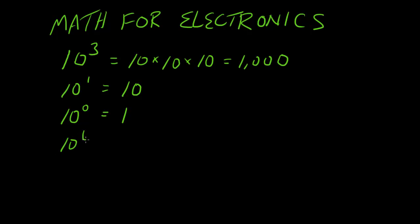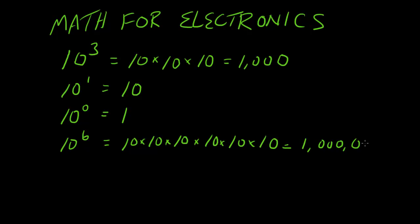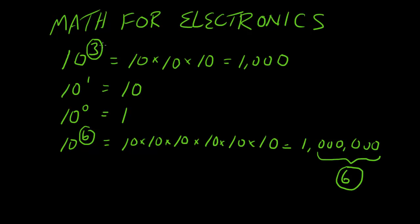So let's say we've got 10 to the sixth. That would be 10 times 10 times 10 times 10 times 10 times 10 — that's 6 — which is equal to 1,000,000. Now look at this: we've got 6 zeros there, which matches the 6 in the exponent. Likewise, 10 to the third has 3 zeros. That's not by accident.